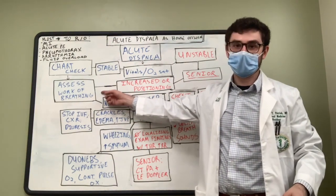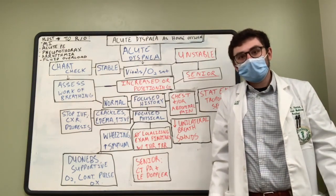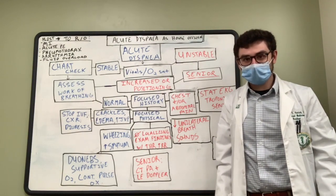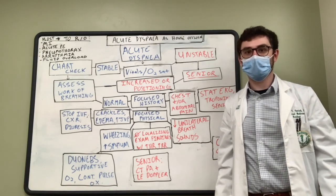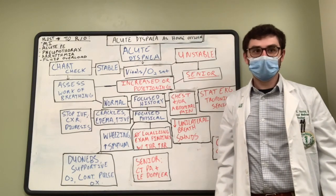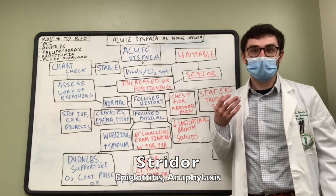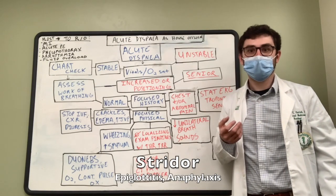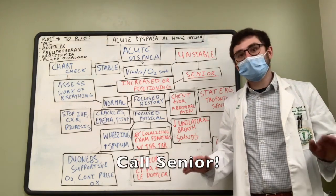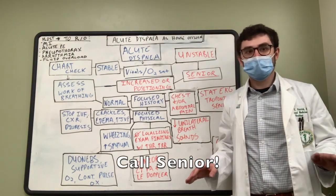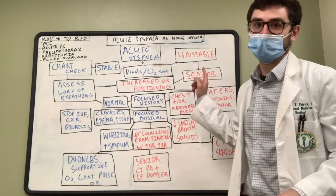Something else to watch out for is stridor. It's a high-pitched noise you hear when the patient takes a deep breath that could indicate a developing acute airway obstruction — from lymphadenopathy, tracheal stenosis, or epiglottitis. The bottom line is this patient needs to be assessed by your senior, and they may also need a higher level of care.